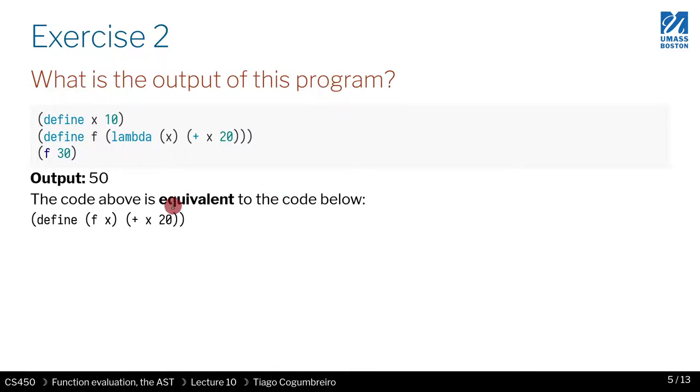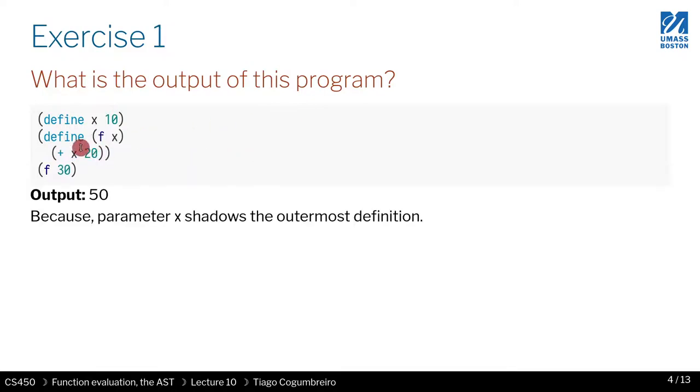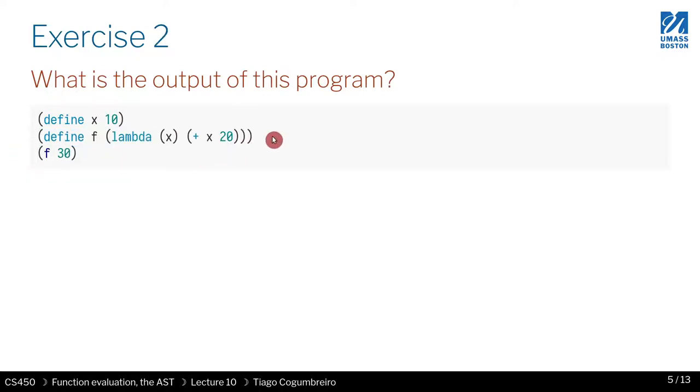Again, it's the same because the code is actually equivalent. We have f where we assign a lambda, which is equivalent to just writing a function definition as we saw. This version is just the syntactic sugar of this version. So the result is again the same.